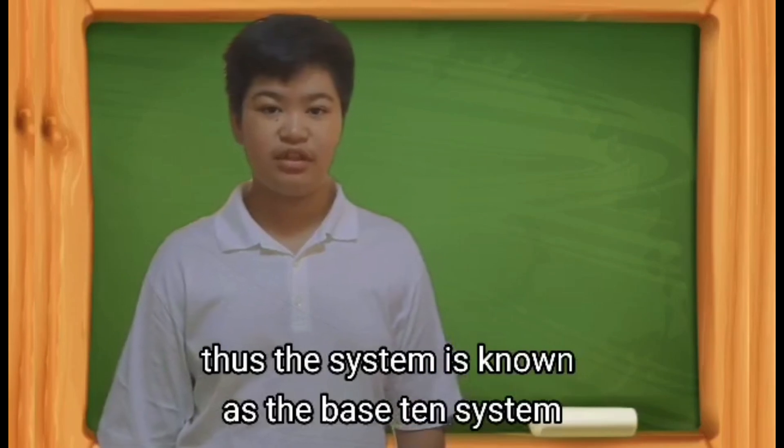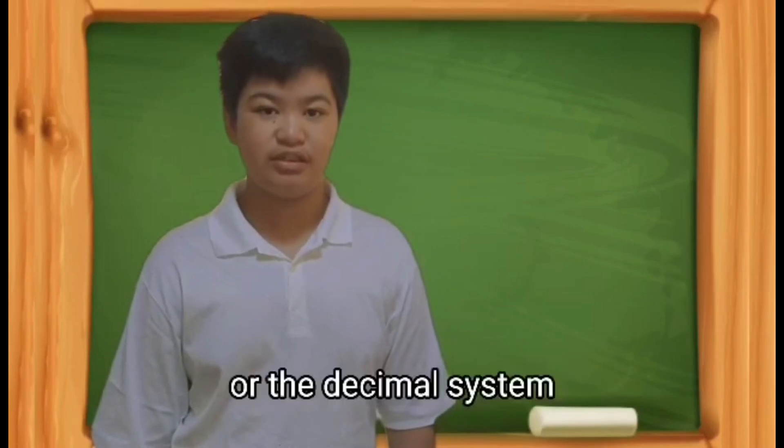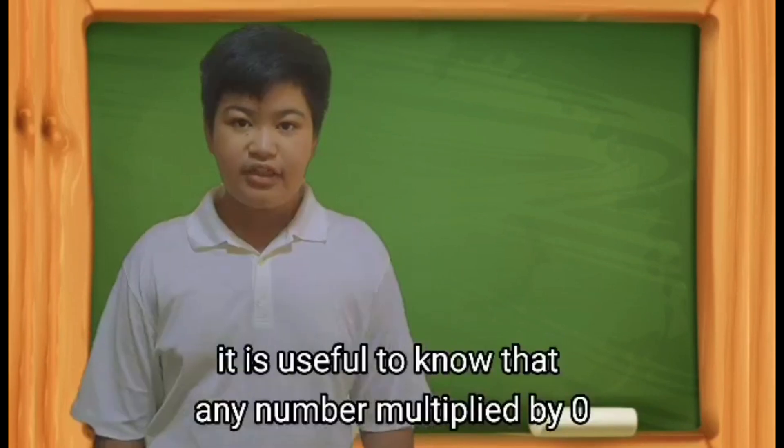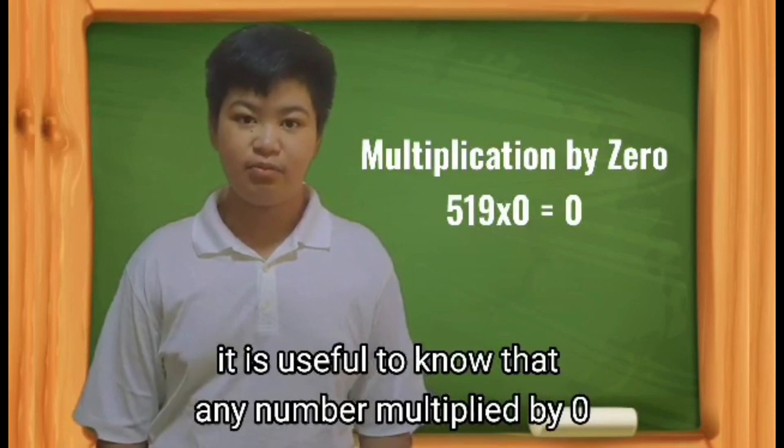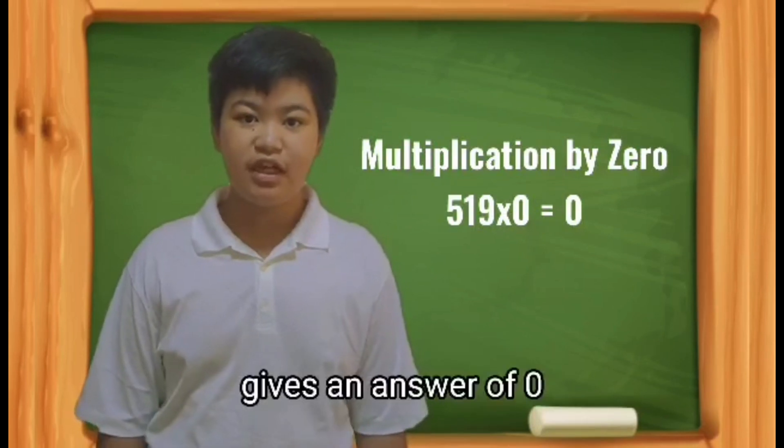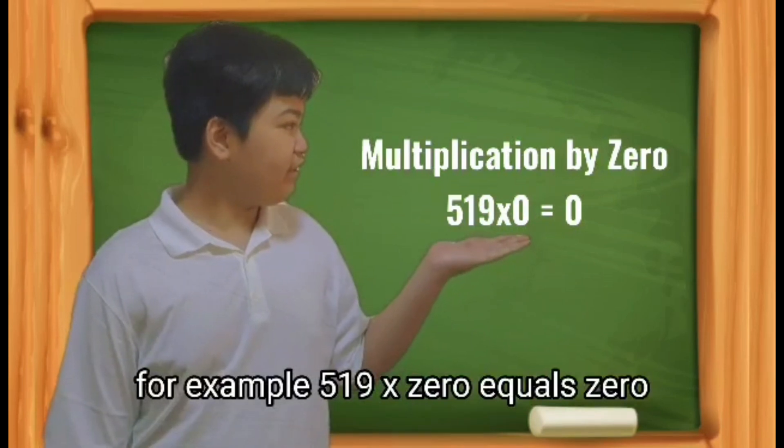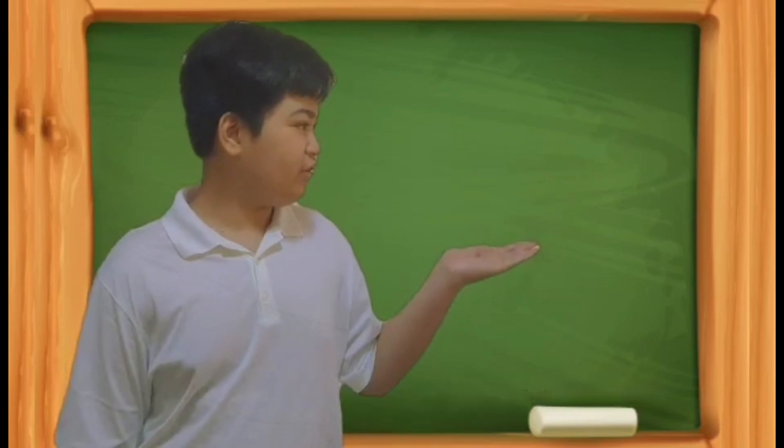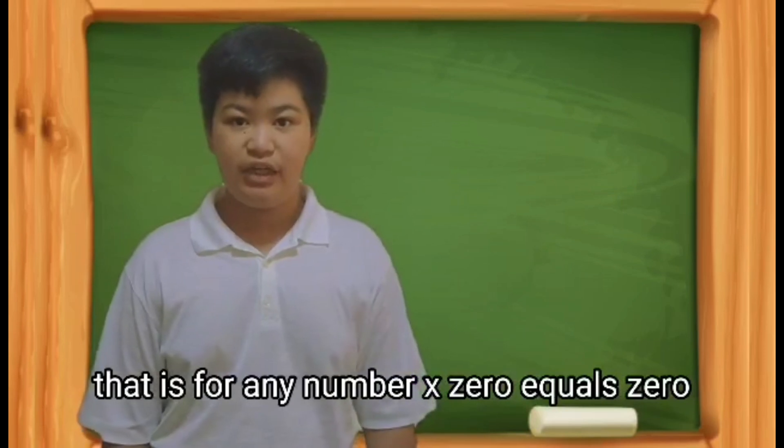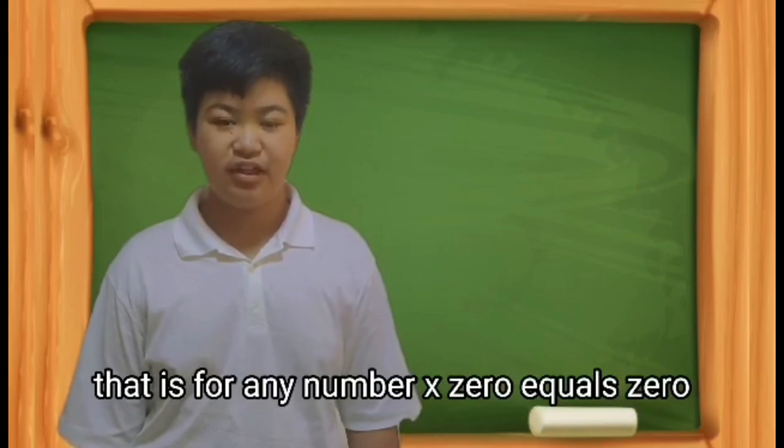Thus, the system is known as the base-10 system or the decimal system. It is useful to know that any number multiplied by 0 gives an answer of 0. For example, 519 times 0 equals 0.